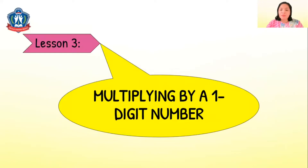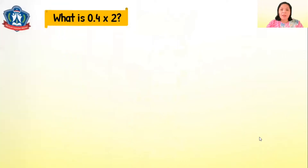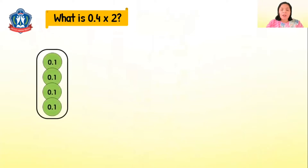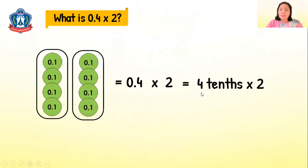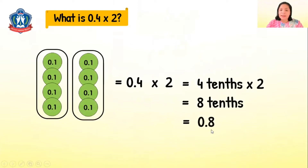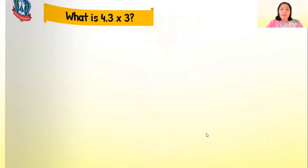Let's start with Lesson 3: Multiplying by a One-Digit Number. Let's multiply 0.4 by 2. 0.4 times 2 means two sets of 0.4. So 0.4 times 2 is 4 tenths times 2, which gives us 8 tenths. 8 tenths written in decimal is 0.8.